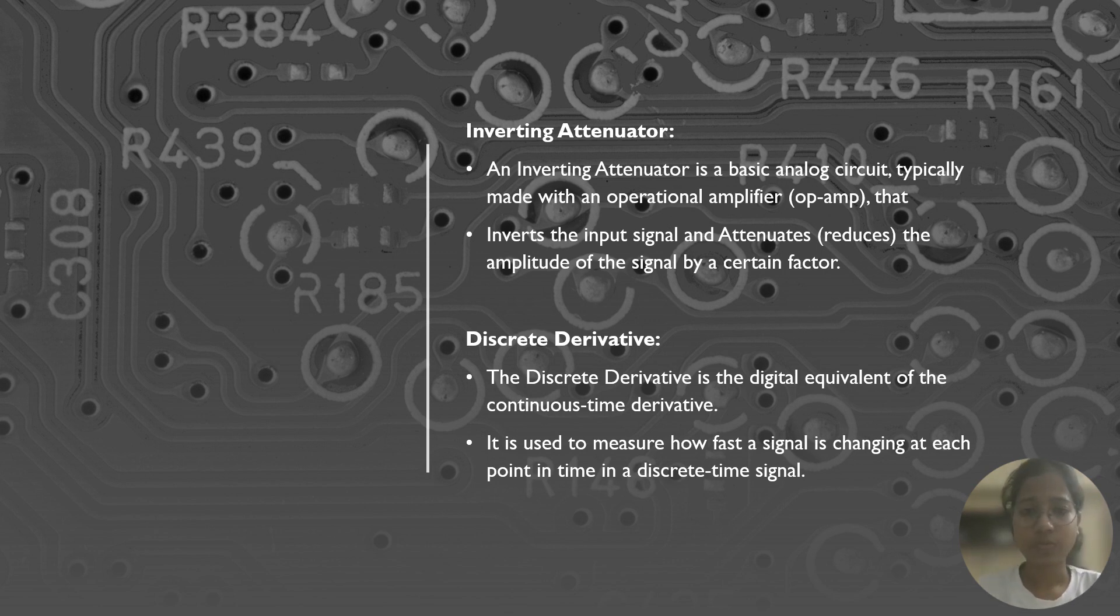Let us move to how convolution is used in processing a signal. There are basically two methods, inverting attenuator and discrete derivative. An inverting attenuator is basically an analog circuit. It is actually made of op-amp, where the input signal is inverted. And attenuator reduces the amplitude of the signal by a certain factor. Whereas discrete derivative is the digital equivalent of the continuous time derivative. It is used to measure how fast the signal is changing at each point in time for discrete time signal.